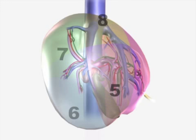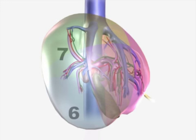The anterior sector is composed of segment 5, inferiorly, adjacent to the gallbladder, and segment 8, superiorly. The posterior sector contains segment 6, inferiorly, and segment 7, superiorly.